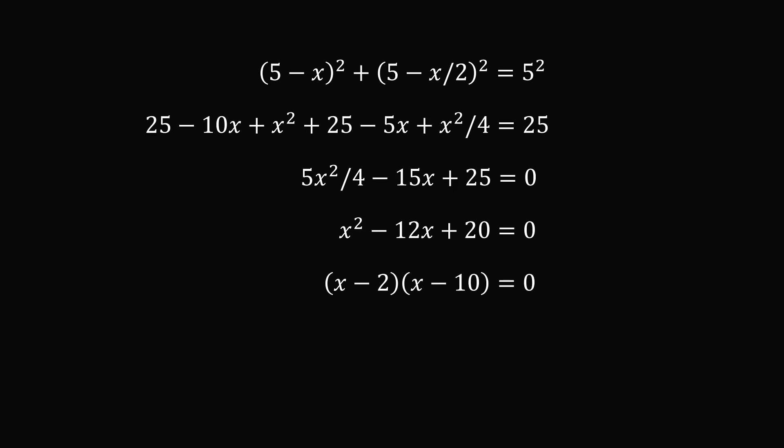Now to get rid of this fractional coefficient on x squared, we will multiply both sides of the equation by 4 over 5. We end up with the quadratic equation x squared minus 12x plus 20 is equal to 0. This can be factored, and the resulting equation is the quantity x minus 2 multiplied by the quantity x minus 10 is equal to 0.